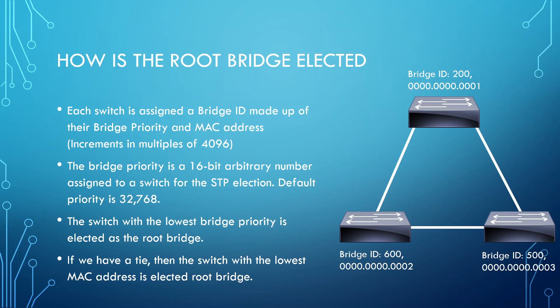We want to dictate via bridge priority which switch becomes the root bridge. If we leave it to the tiebreaker — the MAC address — an older switch with a lower MAC address could be elected over a newer, stronger switch. That's why we have bridge priority: it's an arbitrary value we can configure on our switches to influence the election outcome. We can't change the MAC address because it's burned into the device, but we can change bridge priority so that when switches send BPDUs, the other switches will recognize which one should be the root bridge.